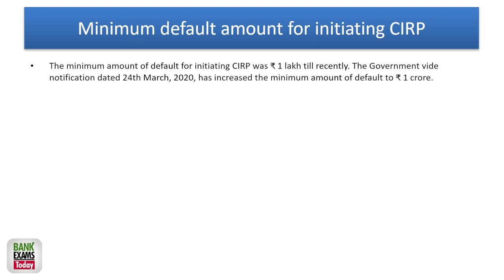The minimum default for initiating the Corporate Insolvency Resolution Process (CIRP) used to be 1 lakh, but now it is 1 crore. If the default is more than 1 crore, only then can you initiate CIRP proceedings.